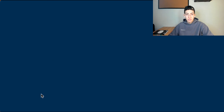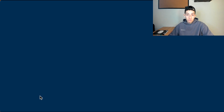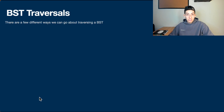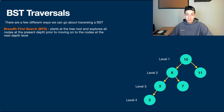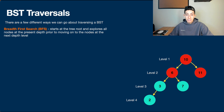Let's talk about traversals and how to traverse binary search trees — there are a few different approaches. The first way is breadth-first search, which starts at the tree root and explores all nodes at the present depth before moving on to the next depth level. In our example there are four levels: 10 is level 1, 6 and 11 are level 2, 3 and 7 are level 3, and 2 is level 4. So breadth-first search visits 10, then 6 and 11, then 3 and 7, and finally 2.